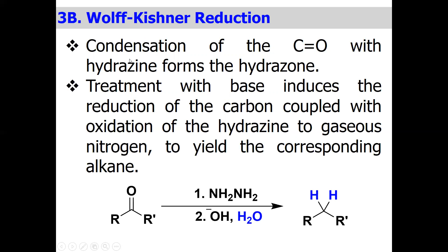The next reaction is Wolff-Kishner reduction. The carbonyl compound first reacts with hydrazine to form a hydrazone. Wolff-Kishner reduction deals with those carbonyl compounds which are acid-labile. We protect the carbonyl group by reacting with hydrazine, converting the ketonic group into the hydrazone, and in the next step the hydrazone is treated with hydroxide — a strong base — to convert into the alkane. The base induces reduction of the carbon coupled with oxidation of the hydrazine to gaseous nitrogen, yielding the corresponding alkane.